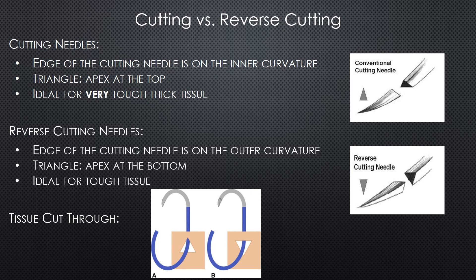Having the apex pointing towards the surface of the wound allows for the suture material to cut through the tissue more easily, especially if there's any tension placed on the suture — for example, if you pull the suture to tie it, if the wound swells, or if the patient is moving before the tissue has healed. There's a higher probability for tissue cut-through with the conventional cutting needle.